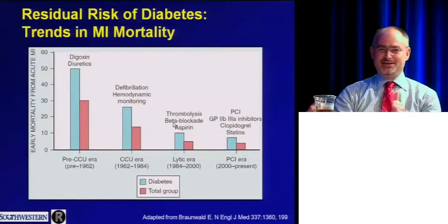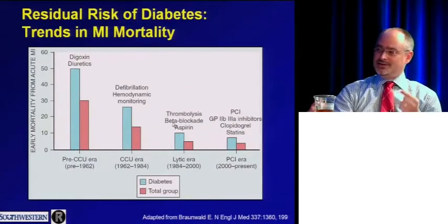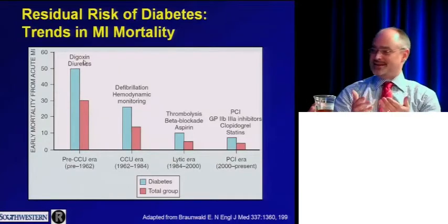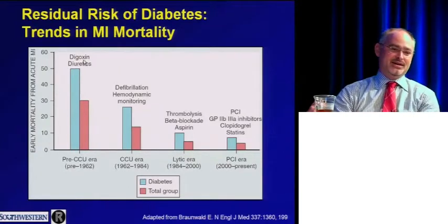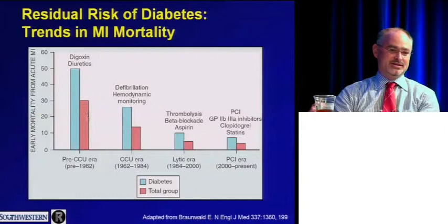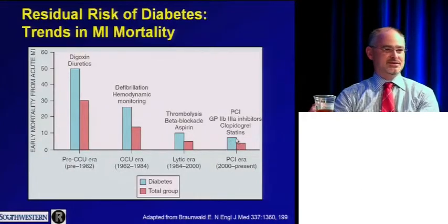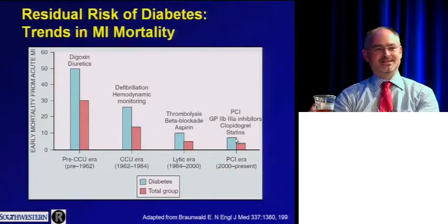Rather than focusing only on blood pressure, lipids, and antiplatelet therapy, let's look at what's happened to patients with diabetes who have heart attacks. Over time — from pre-ICU in the 1960s through the 1980s to the present — everybody has improved outcomes with MI, whether or not they have diabetes. But the gradient of risk has persisted — diabetes portends a two- to three-fold increased likelihood of most adverse events, even in contemporary management.